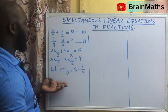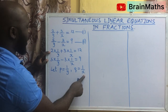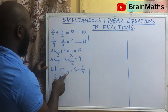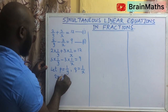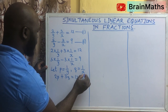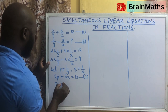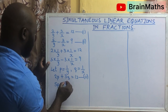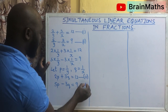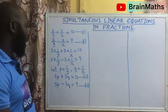Now we find a way to simplify this equation by looking for other variables to replace 1 over y and 1 over x. So we let p equals 1 over y and q equals 1 over x. So 1 over y represents p and 1 over x represents q. We have 2p plus 3q equals 12, which is equation 3. And then 5p minus 3q equals 9, which is equation 4.